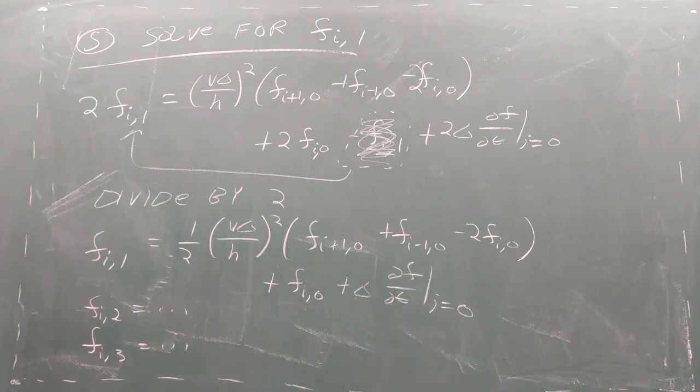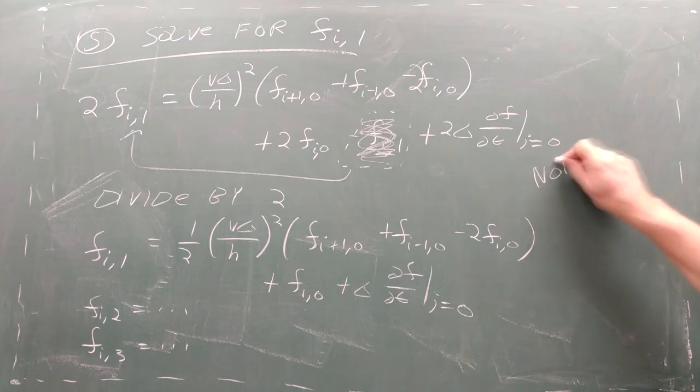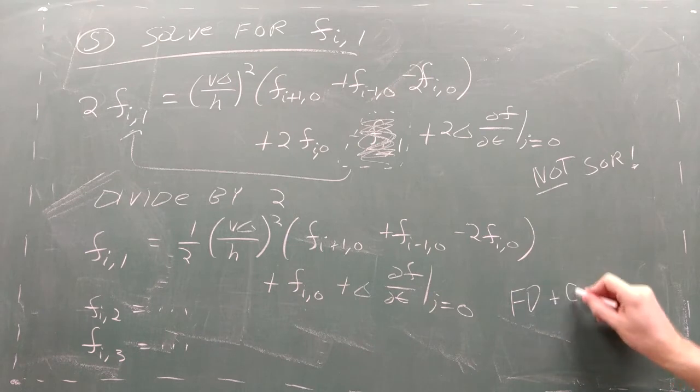This gives us enough information to begin iterating forward in time. Notice that this process is not successive over-relaxation, since we're not making better guesses, but rather moving forward in time, giving us a hybrid of finite differences with the Euler-Cromer method.